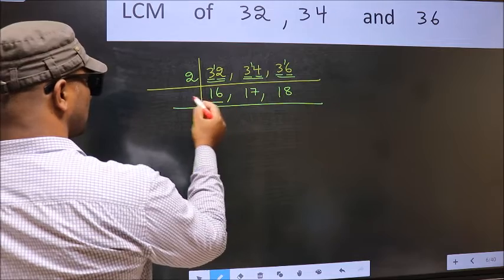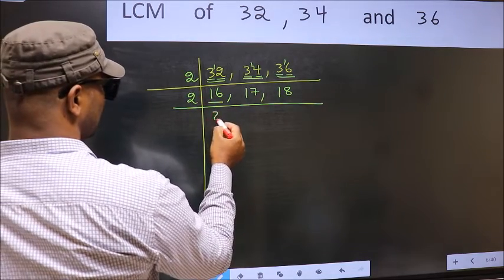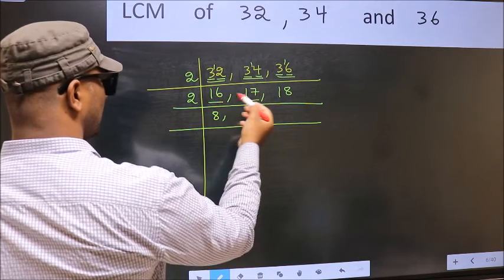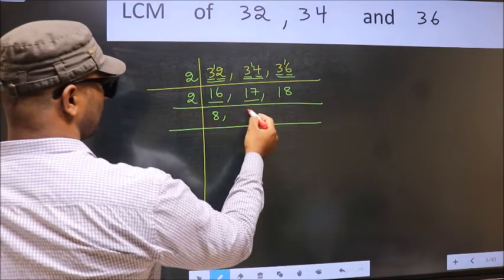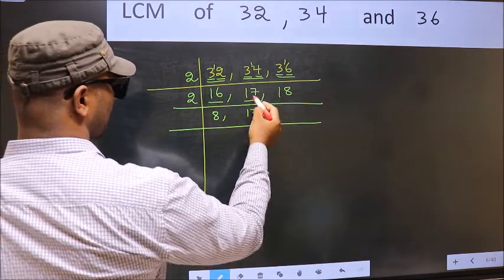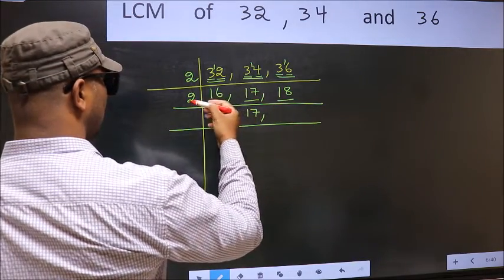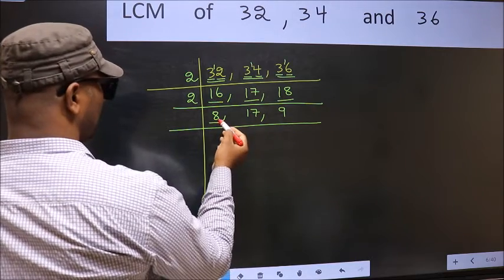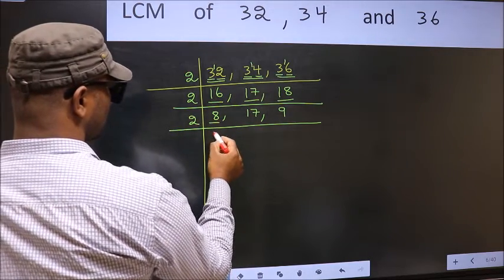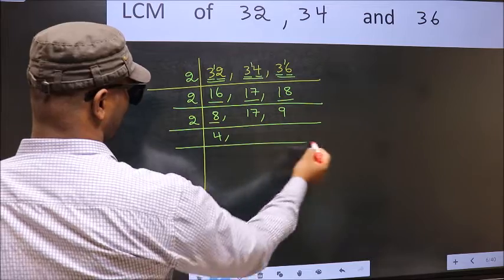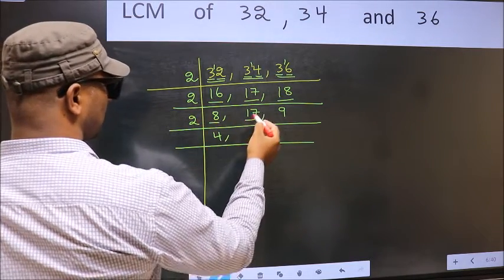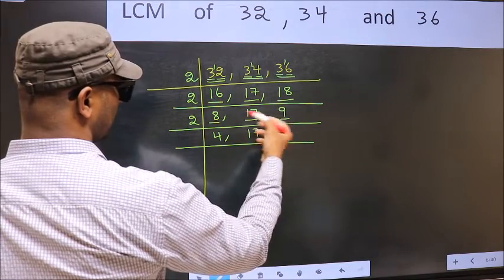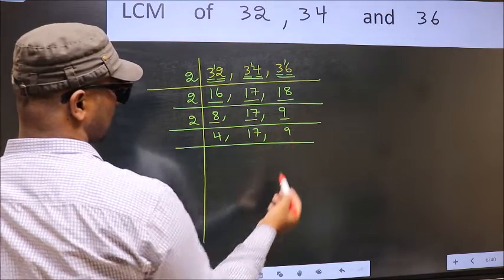Now here we have 16. 16 is 2, 8's 16. The other number 18 — when do we get 18 in the 2 table? 2, 9's 18. Now here we have 8. 8 is 2, 4's 8. The other number 17 — not divisible by 2, so you write it down as it is. The other number 9 — not divisible by 2, so you write it down as it is.